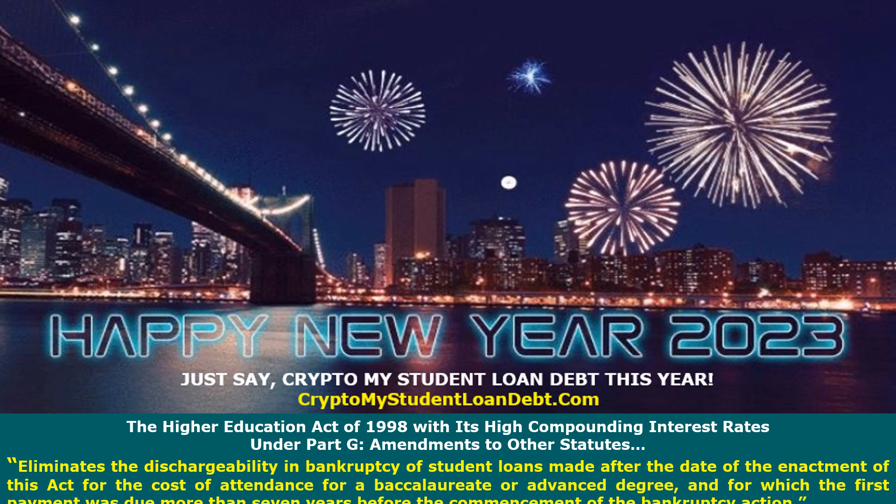Look at the bottom: the Higher Education Act of 1998, with its high compounded interest rates under Part G of the amendment of that act, is what this is all about. It eliminates the dischargeability in bankruptcy of student loans made after the date of the amendment of this act for the cost of attending higher education. Pay close attention to this act — the compounding form of interest can be as high as seven or eight percent for a person out of high school who doesn't fully understand the rate being charged.